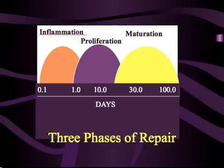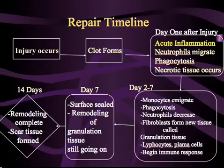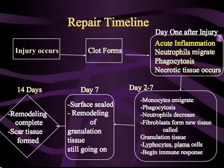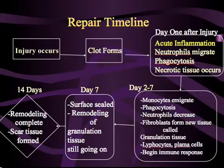A typical repair timeline, as mentioned in your textbook, involves clotting — clot formation or hemostasis — that begins immediately. By day one, or often much sooner, acute inflammation has begun, in which the neutrophils, or first responders, arrive and begin to phagocytize foreign invaders and necrotic tissue. During days two through seven, the monocytes emigrate to the site of injury and change into macrophages. They also phagocytize invaders and necrotic tissue, as well as mark some cells for destruction by a process called opsonization. As monocyte and macrophage activity increases, the neutrophil activity decreases. By day seven, all other factors being normal, the surface has healed and granulation tissue remodeling is still going on.